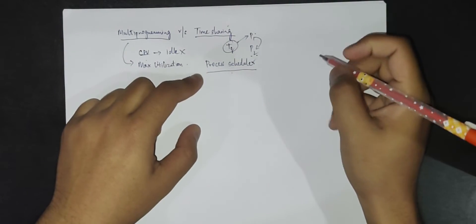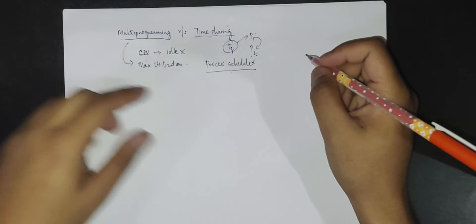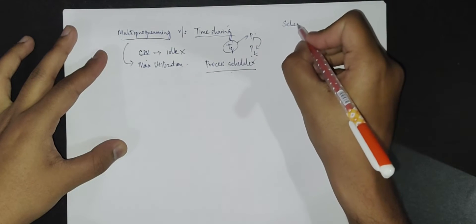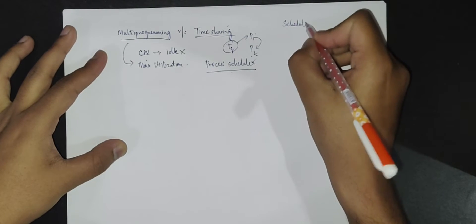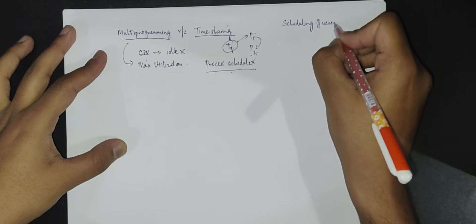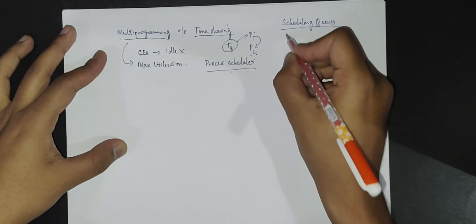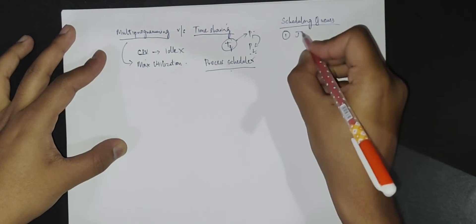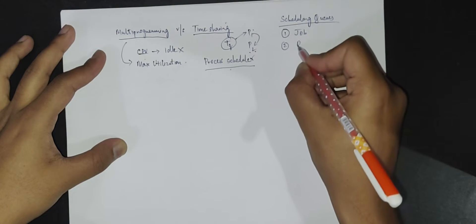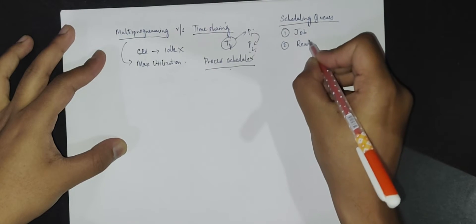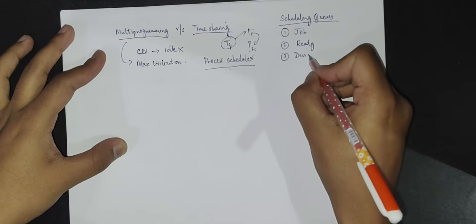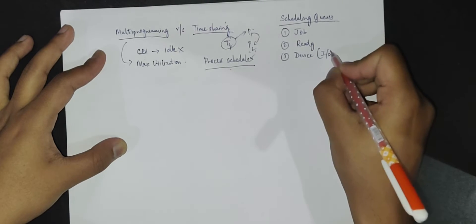Before moving to process schedulers, it's better to understand something called scheduling queues. There are actually three types of queues: one is called the job queue, there is one more called the ready queue, and we also have the device queues, also called IO queues.